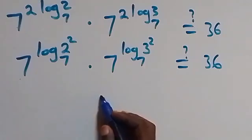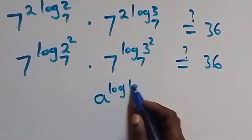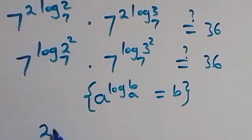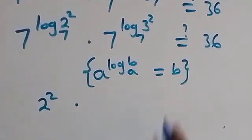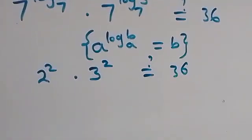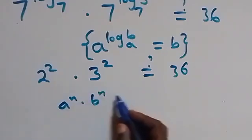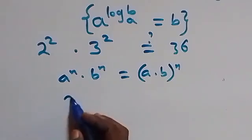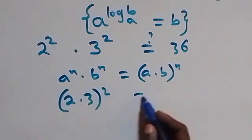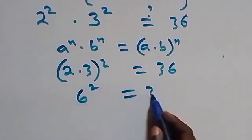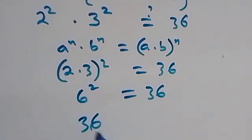This follows from the law of logarithms: a raised to power log base a of b equals b. So what we have now is 2 squared times 3 squared equals 36. Then from the law of indices, a raised to power n times b raised to power n equals (a times b) raised to power n. We bring this together: (2 times 3) all squared equals 36, and 6 squared equals 36. So left hand side equals right hand side.